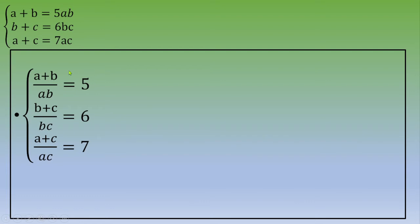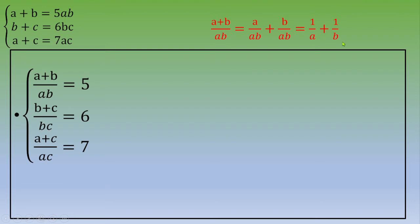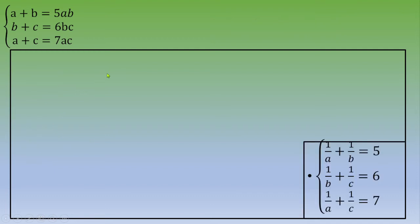One thing to notice is that you can modify these expressions. For example, A plus B over AB can be split into A over AB plus B over AB. Simplifying gives 1 over A plus 1 over B. Applying this to all three equations gives: 1 over A plus 1 over B equals 5, 1 over B plus 1 over C equals 6, and 1 over A plus 1 over C equals 7.